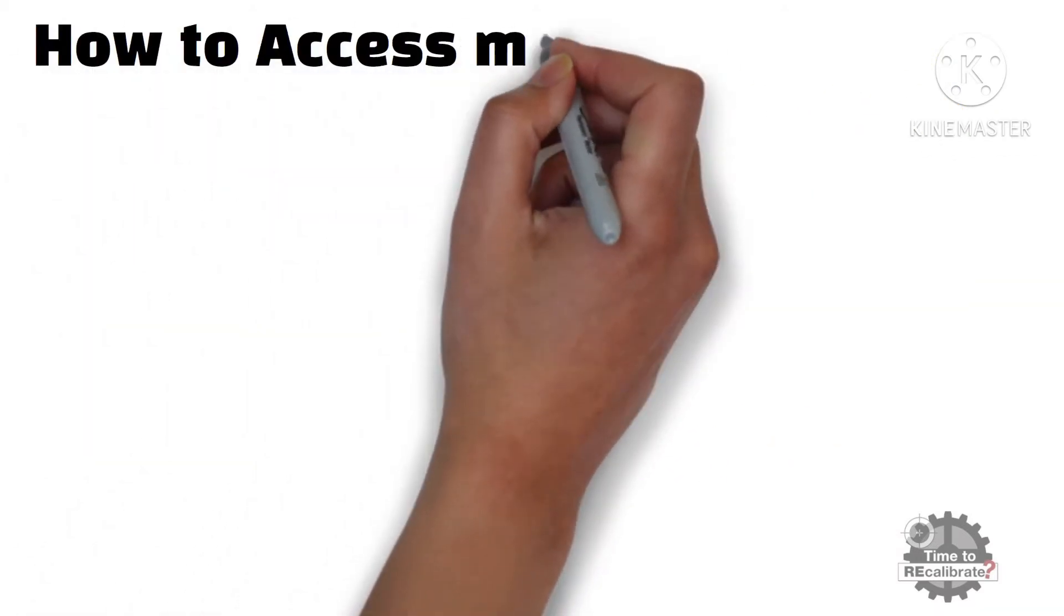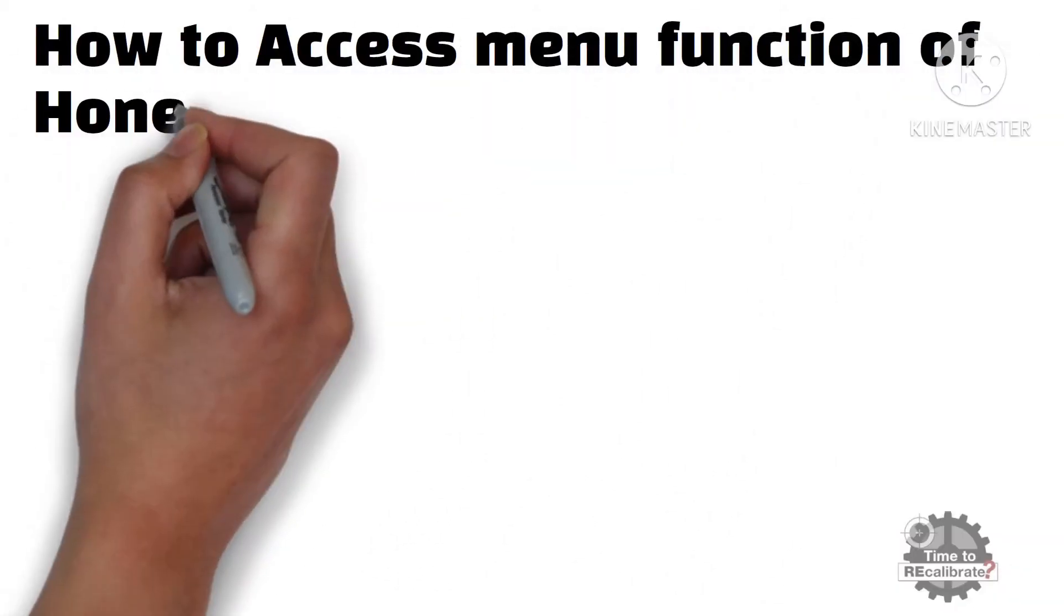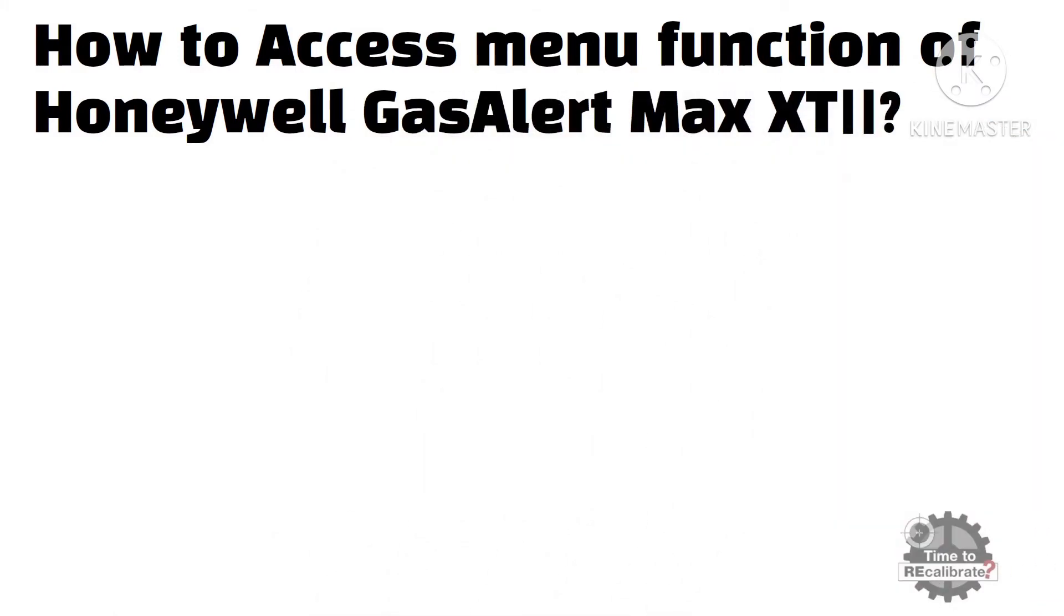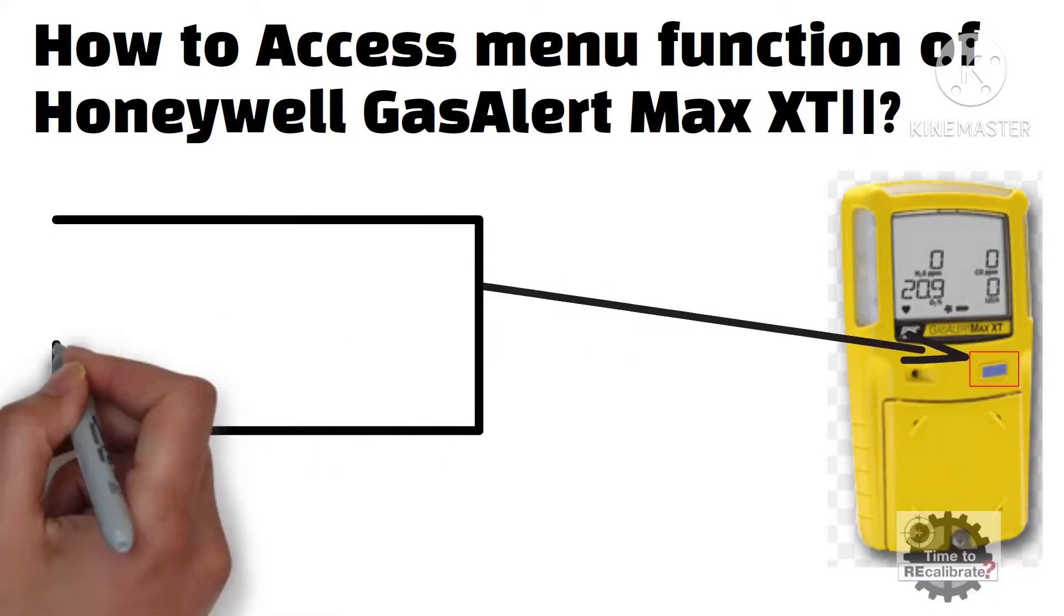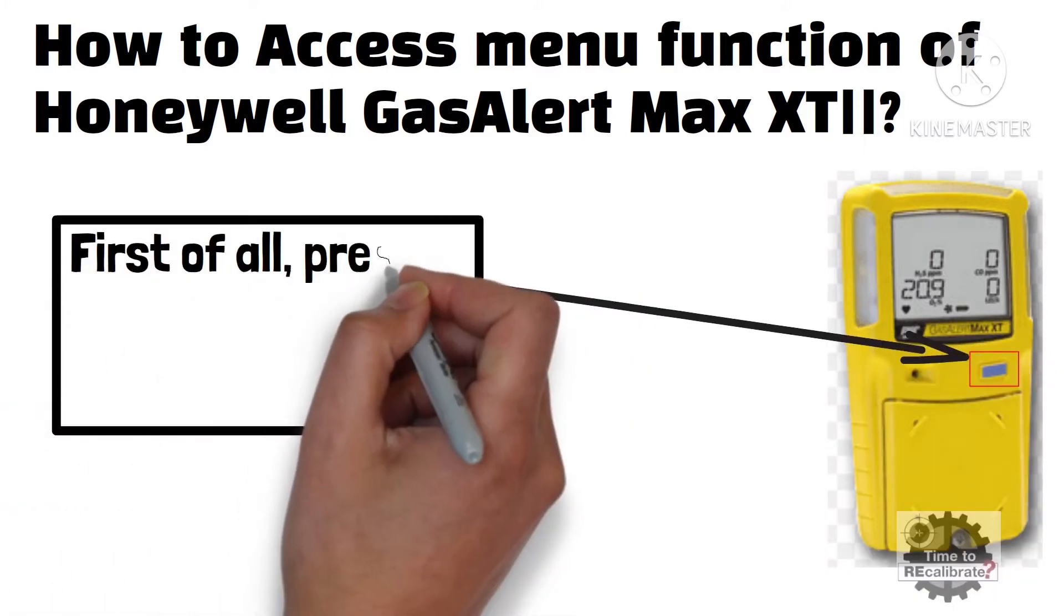First of all, how to access menu function of Honeywell GasAlert Max XT. This device has one button operation. Press push button to turn on the device.